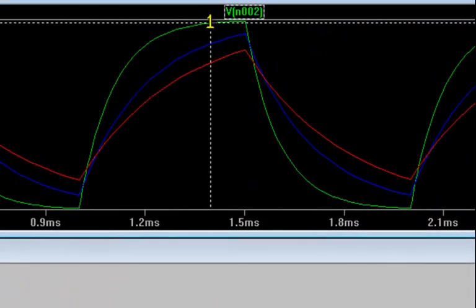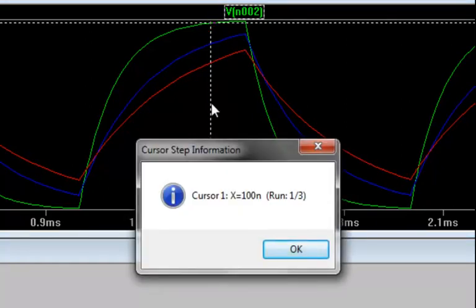If you're not sure what step value you're looking at, you can position your crosshairs over the cursor, and the cursor numbers should become visible, and then you can right click on that, and it will tell you in the information box the particular step information for that run. In this case, this was the 0.1 microfarad run.